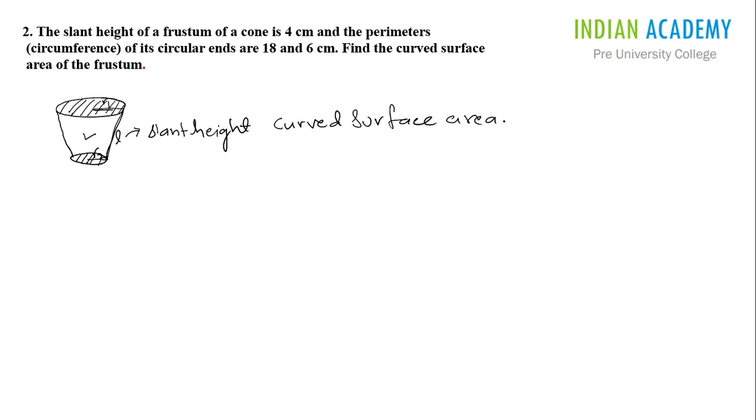Curved surface area equals π(r1 + r2) × l. Let's look at the dimensions given. They have given you the slant height, that is l equals 4 centimeter.